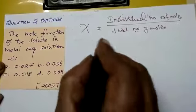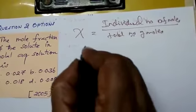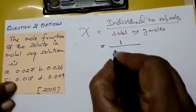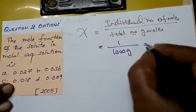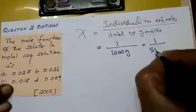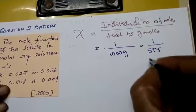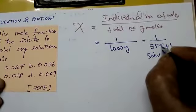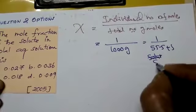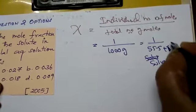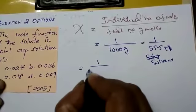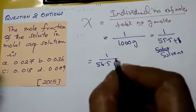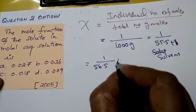The question asks for the mole fraction of the solute in a 1 molar aqueous solution, meaning the number of moles of solute is 1. The aqueous solution contains water — 1000 grams of water, which is 55.5 moles. So the solvent is 55.5 and the solute is 1. So the mole fraction is 1 divided by 56.5.